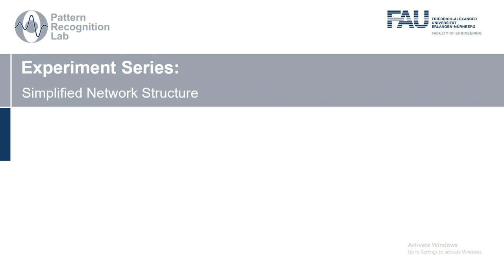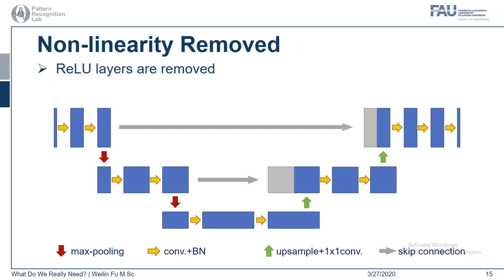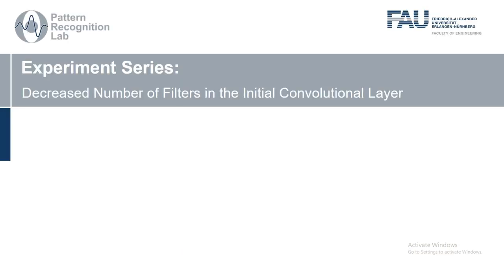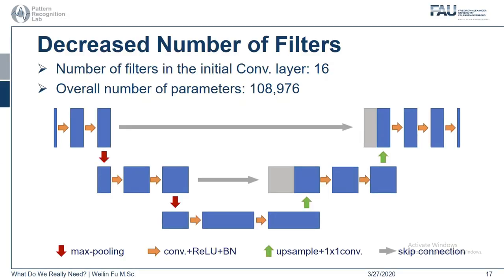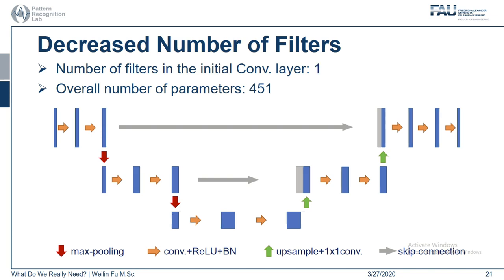As for the degeneration, we start with a three-level UNET with 16 filters in the initial convolutional layer, two convolutional layers in each block, and RELU as the activation function. In the first experiment series, we reduce the number of convolutional layers in each block — which halves the overall parameters — or we remove the non-linearity introduced by the RELU layers, which does not change the parameter count. In the second experiment series, the number of filters in the initial convolutional layer is halved from 16 to 8, 4, 2, and finally 1, reducing overall parameters from around 100,000 to only around 500.